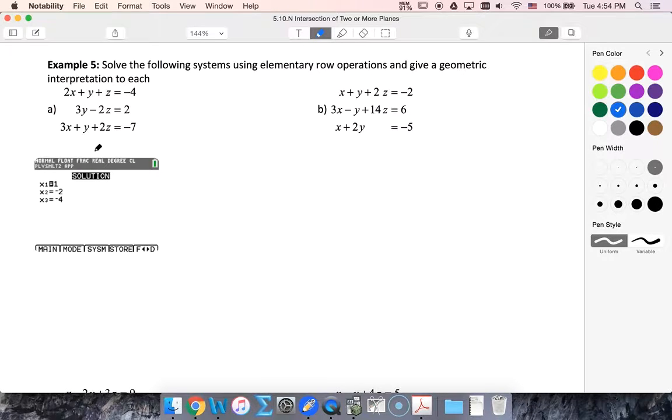However, these planes also are not perpendicular to each other, because I can see that 2, 1, 1 dotted with 0, 3, negative 2 does not equal 0, but these planes still intersect just at a single point. And I know that because I got a single point as the solution.